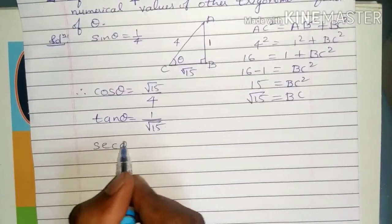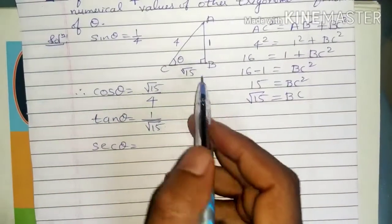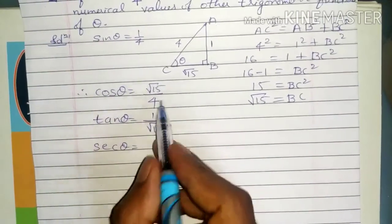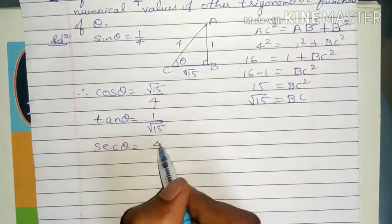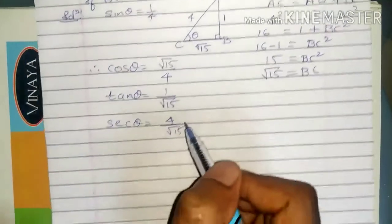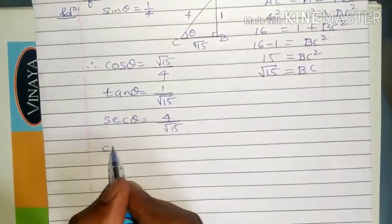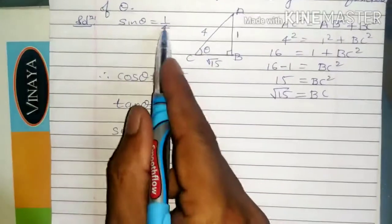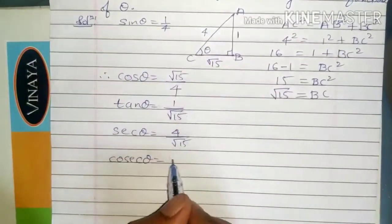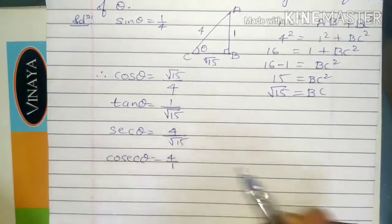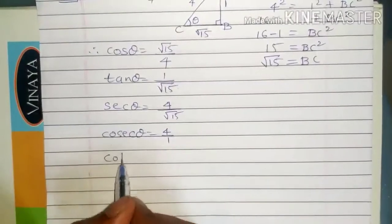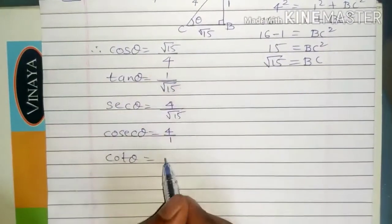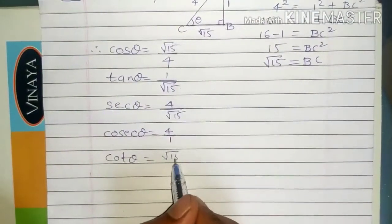Sec theta is the reciprocal of cos theta, so that is 4 by root 15. Cosec theta is the reciprocal of sin theta, so that is 4 by 1, which is 4. Cot theta is the reciprocal of tan theta, so that is root 15 by 1, i.e., root 15.